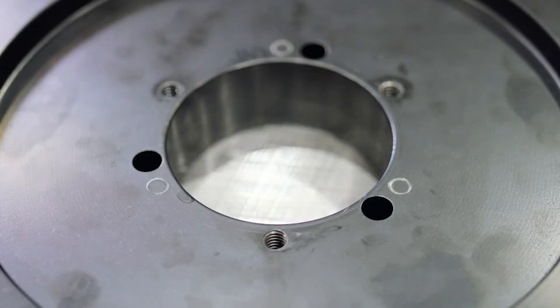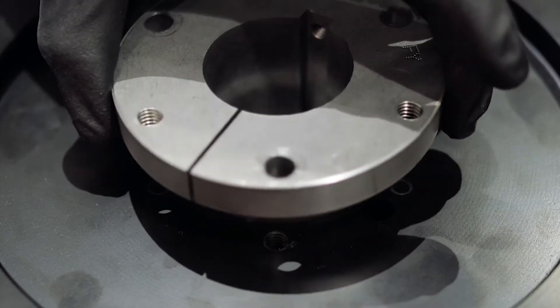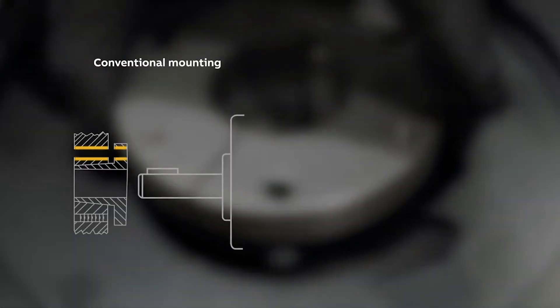Insert the bushing into the hub. QD bushings can be mounted in two different ways: conventional or reverse mount.